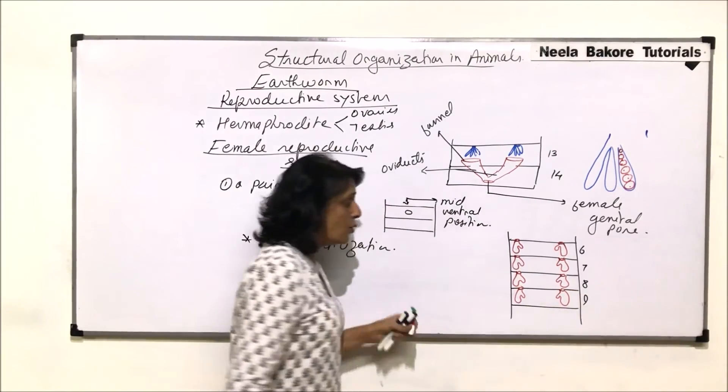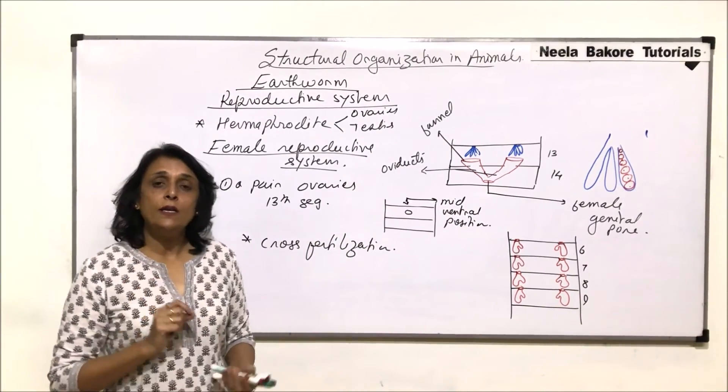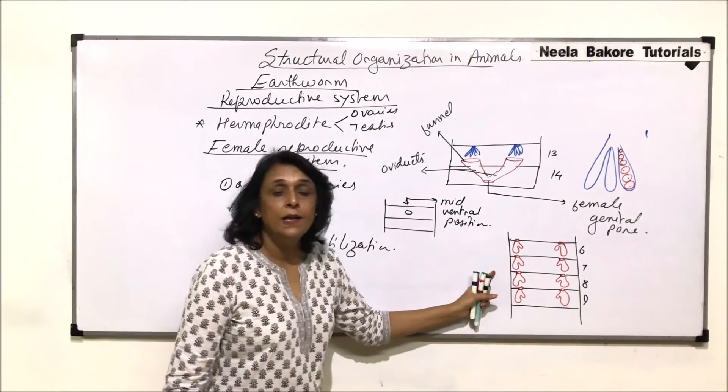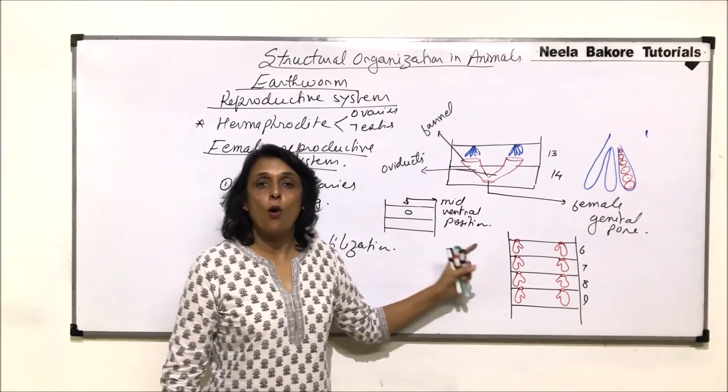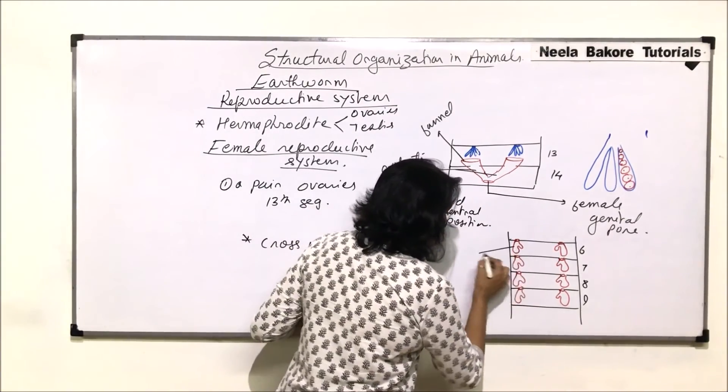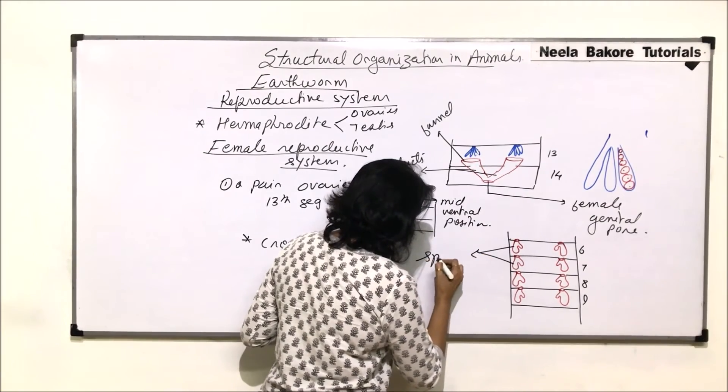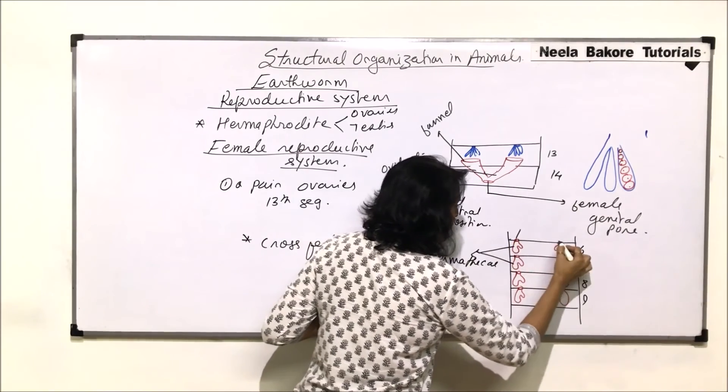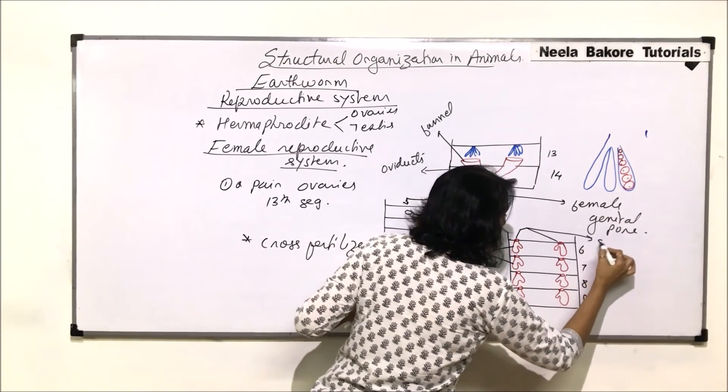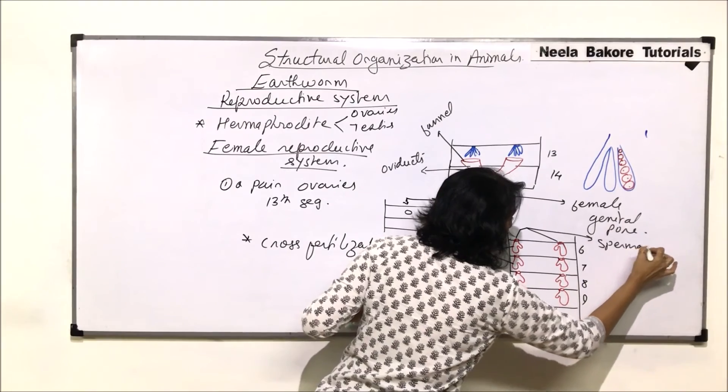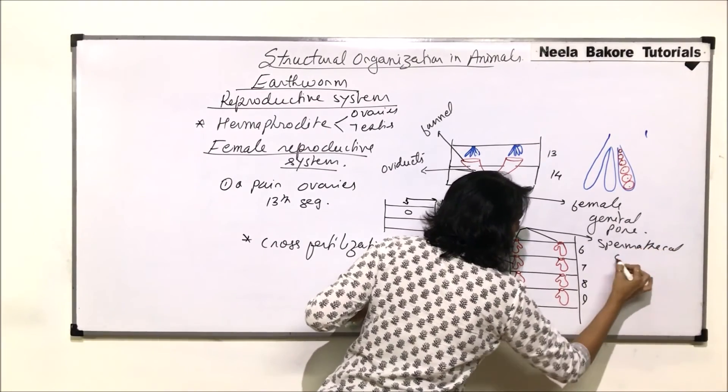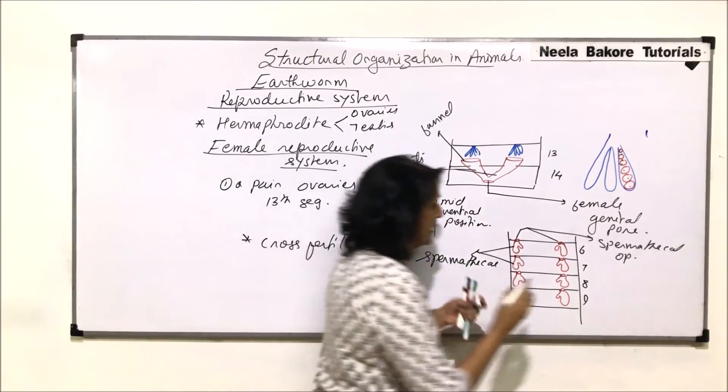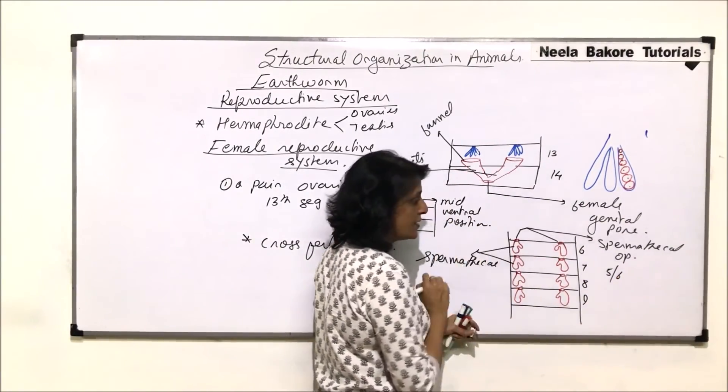During copulation, one worm deposits its sperms in the spermathecae of the other worm. These are spermathecae, and these openings are called spermathecal openings or apertures. The openings are five-six segments because it is the septum.